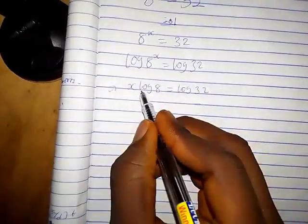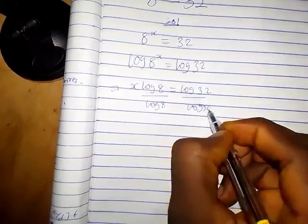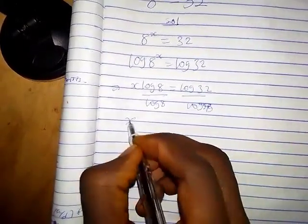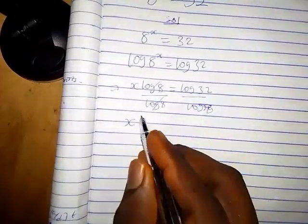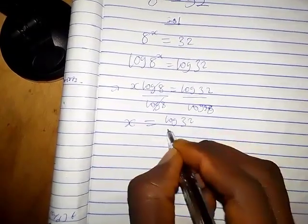Now let's divide both sides by log 8. Doing so, we have x log 8 divided by log 8, which is 1, so x equals logarithm of 32 over logarithm of 8.